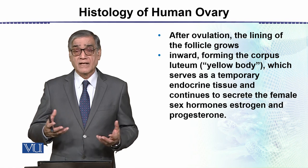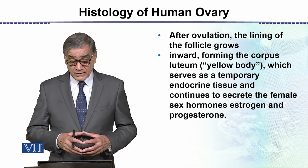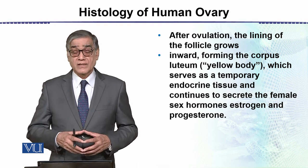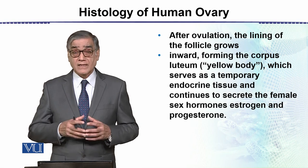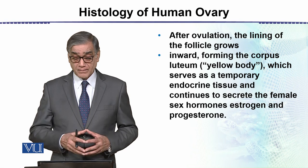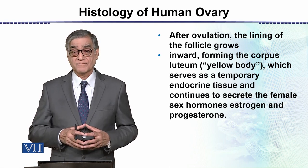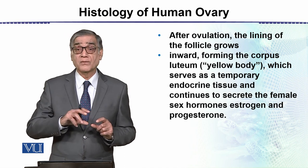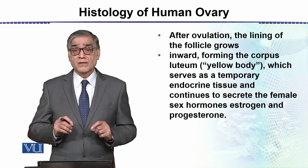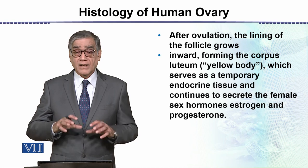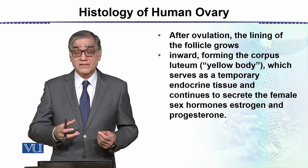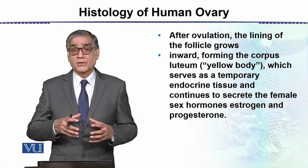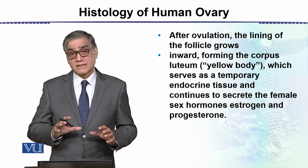If sperms are not present, the egg will not be fertilized. After ovulation, the lining of the follicle grows inward forming the corpus luteum, which serves as temporary endocrine tissue and continues to secrete the female sex hormones estrogen and progesterone. Progesterone is produced after ovulation when the Graafian follicle is transformed into the corpus luteum.